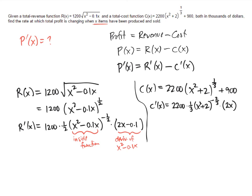So my formula for p prime would just be the difference between these two answers. And for this problem and for problems like this, we don't have to simplify our derivatives. So 1200 times 1/2, we could write that as 600. There's nothing wrong with doing that, but we don't need to do that simplification, so I'm just going to leave it.